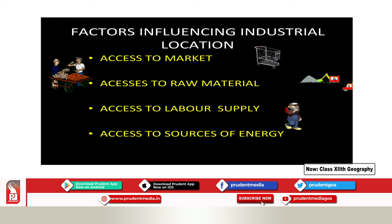The next factor is access to sources of energy. Energy is a fundamental requirement for any localization of industry. Energy sources include hydroelectricity, mineral oil, or coal. Heavy industries like iron and steel are generally located near the source of energy. So energy plays a very important role in the localization of industries.